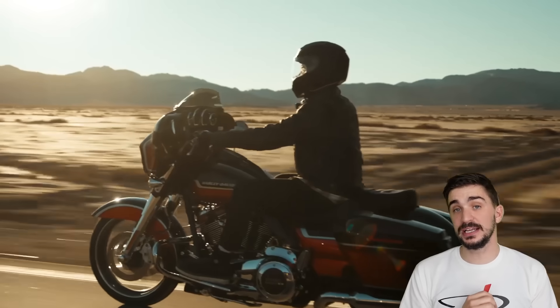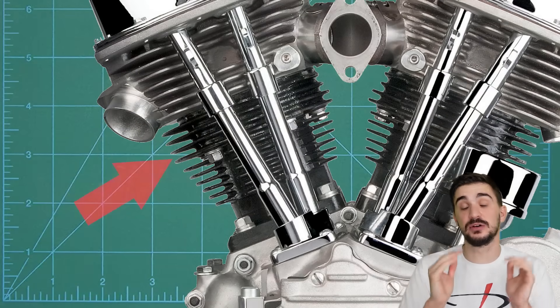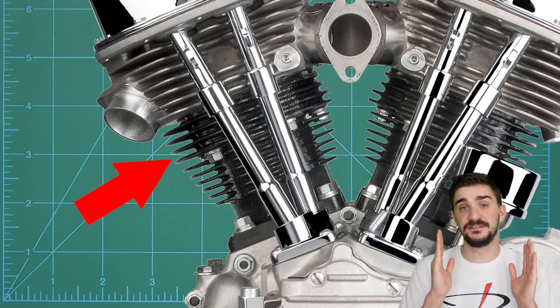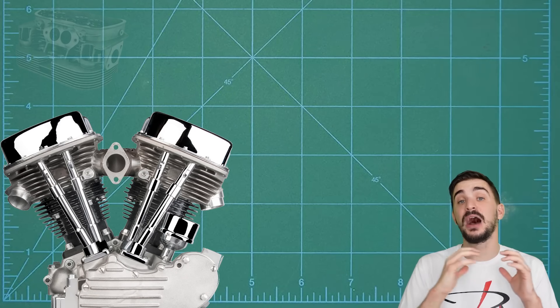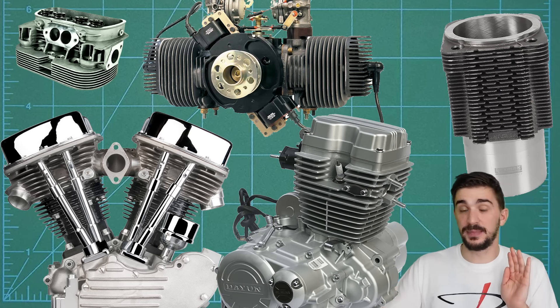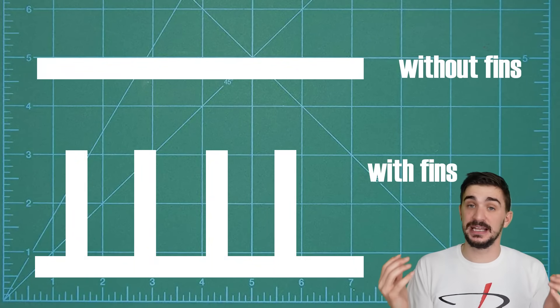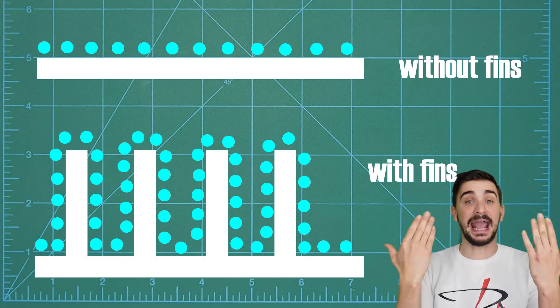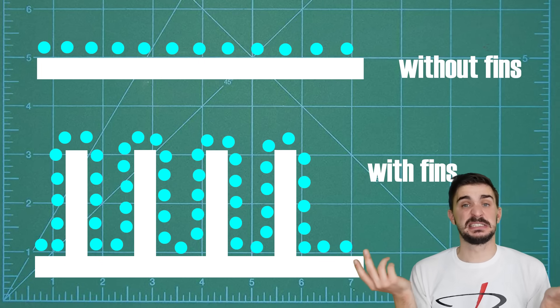You can easily recognize air-cooled engines by the increased number of fins on their cylinder heads and sometimes even on other parts of the engine as well. These fins serve the purpose of increasing the outer surface area of the engine over which air can pass and heat exchange can occur. In other words, by increasing the outer surface area, we increase the space over which heat can be distributed and dissipated. And that's the basics of air cooling.